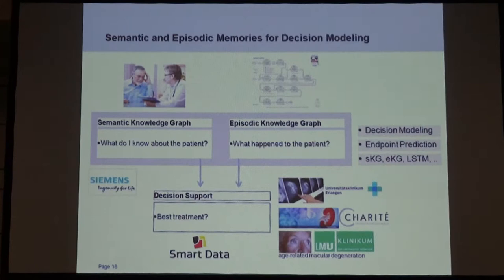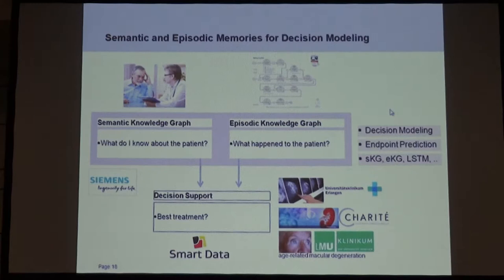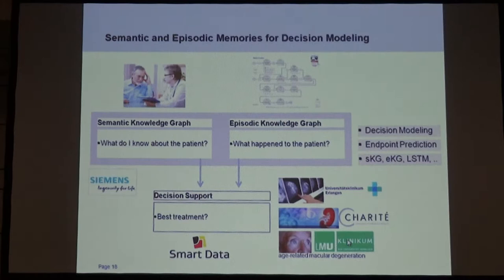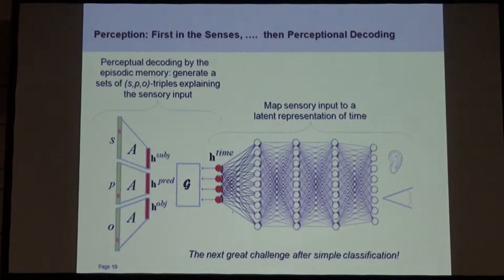We apply this to medical decision support. The semantic data would be everything we know about the patient as background information. The episodic data would be what happened to the patient in the last visits — in nephrology, patients come back every couple of months to the clinic and get their blood analyzed. We want to find the best treatments and procedures. Two approaches: decision modeling, predicting the next action of the physician, and endpoint prediction, predicting survival of the kidney. We use a mixture of semantic knowledge graph, episodic knowledge graph, and LSTM models. We have data from breast cancer, nephrology from Charité, and age-related macular degeneration from the LMU clinic.